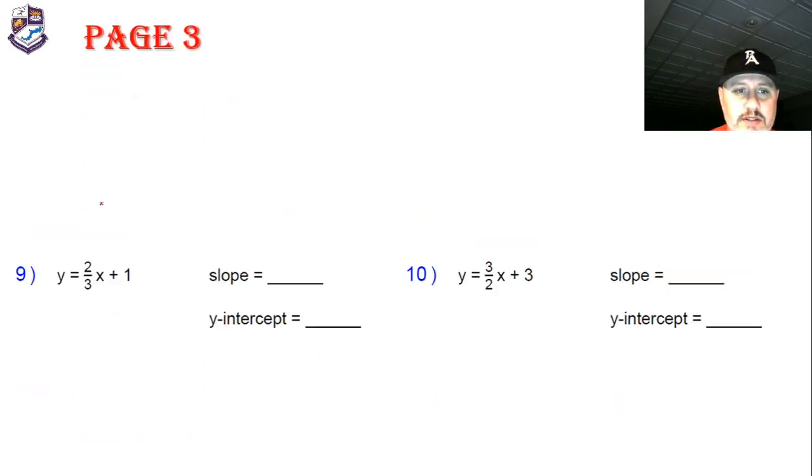And the final problems. Should I sing again? All right. The slope is two thirds, and the y-intercept is one.